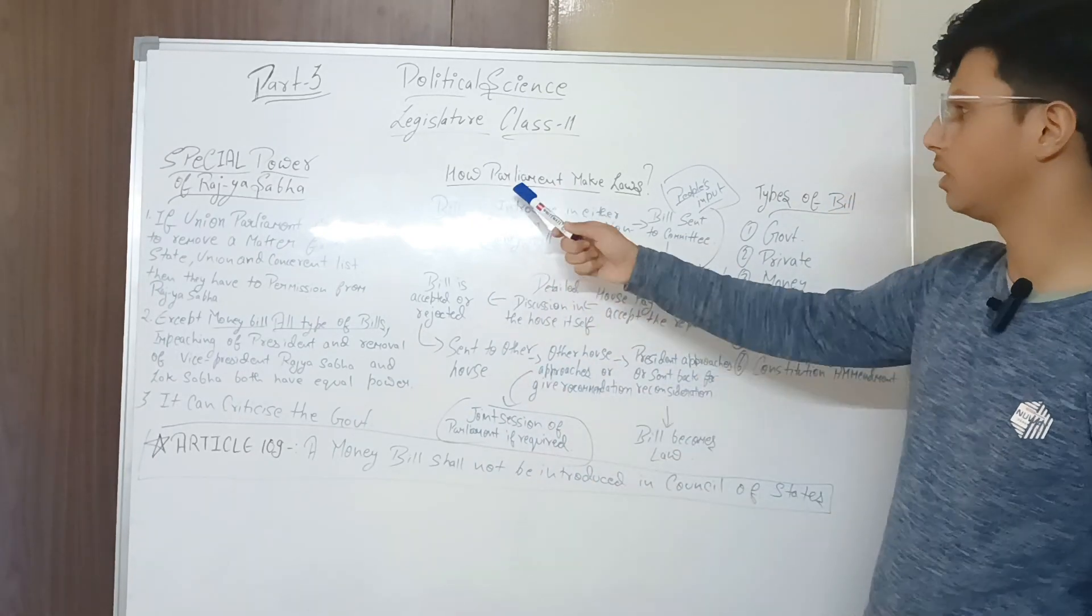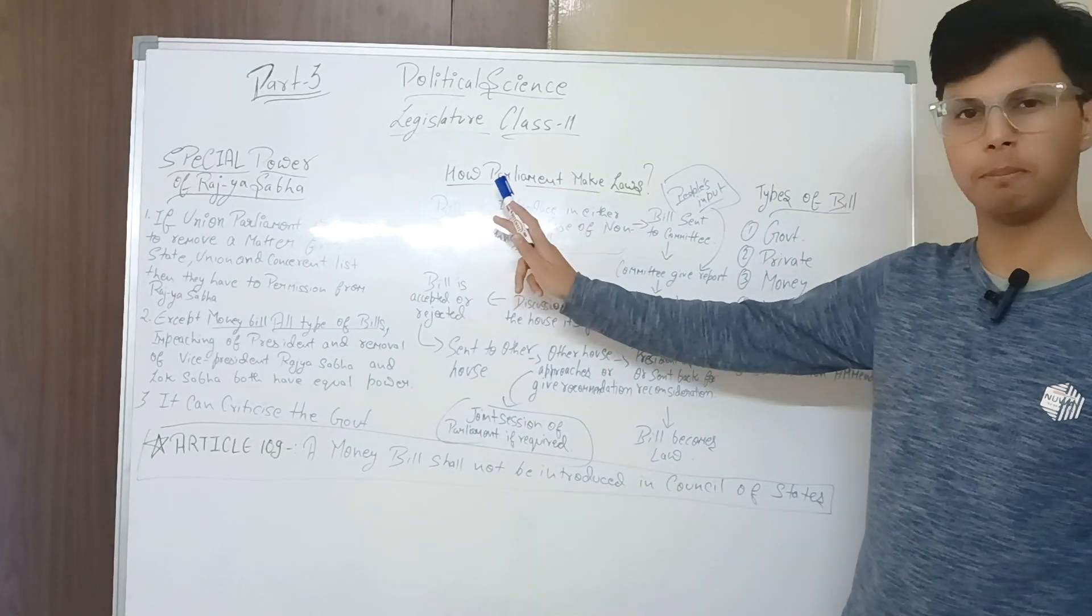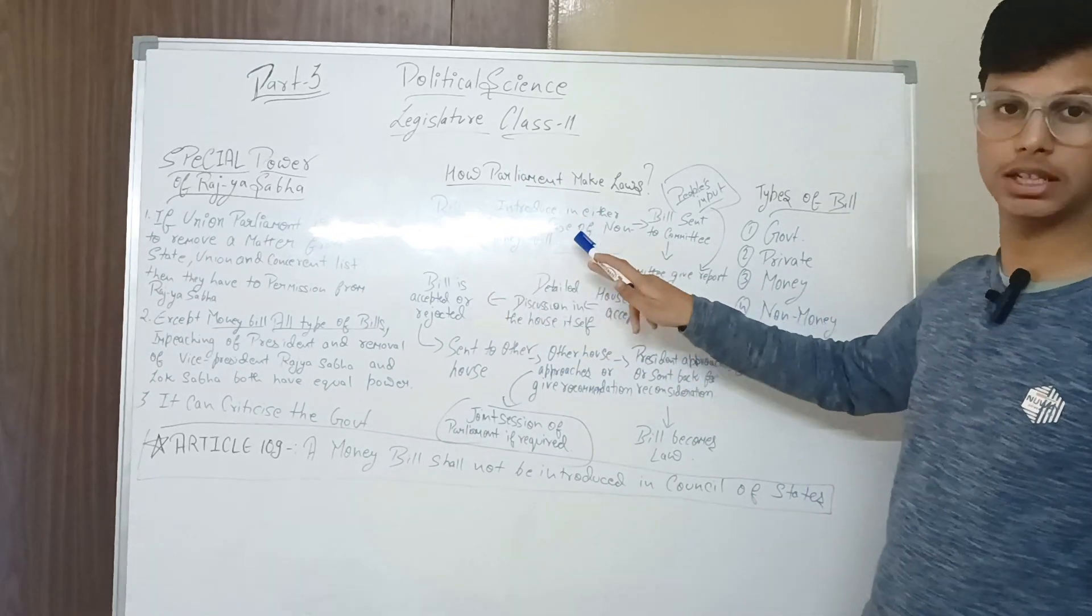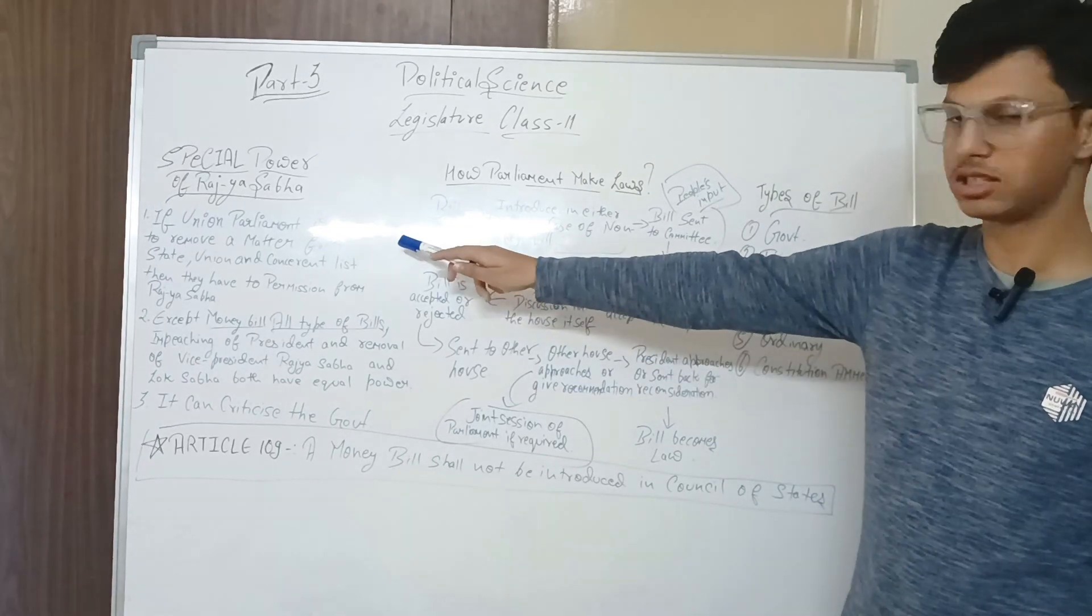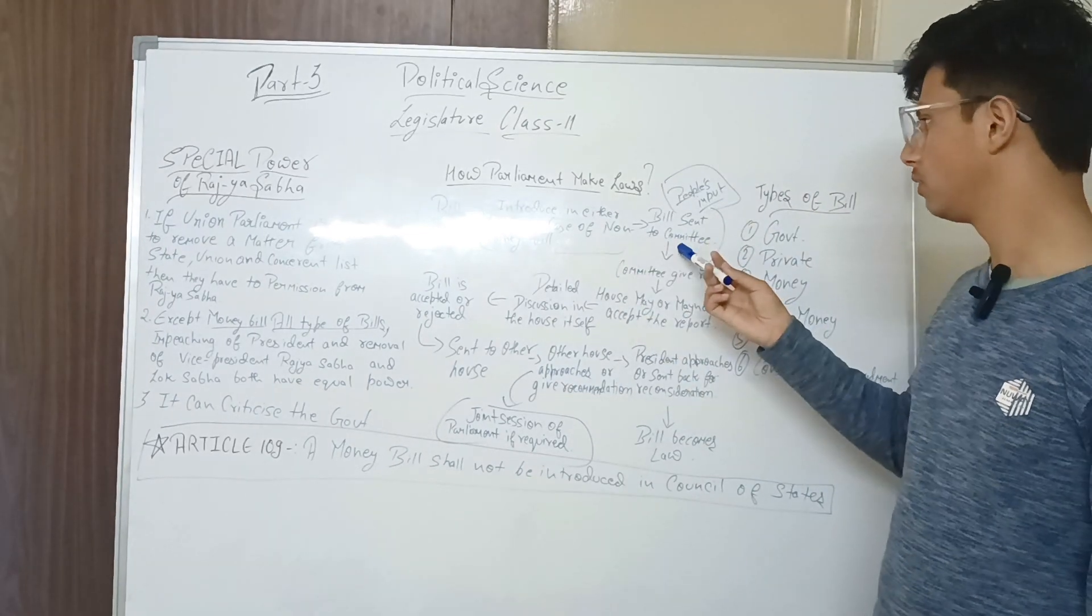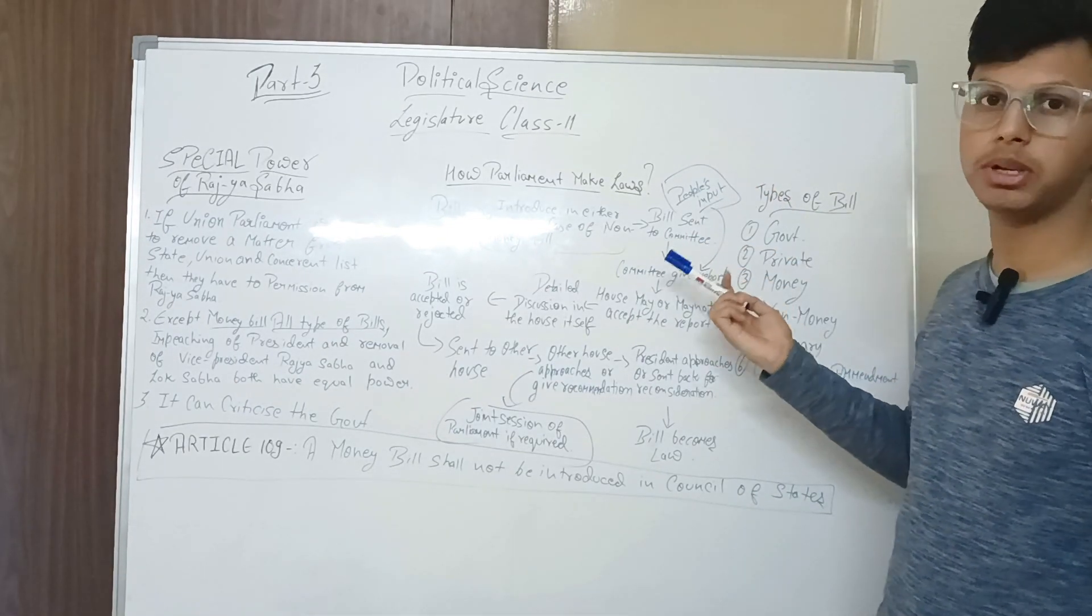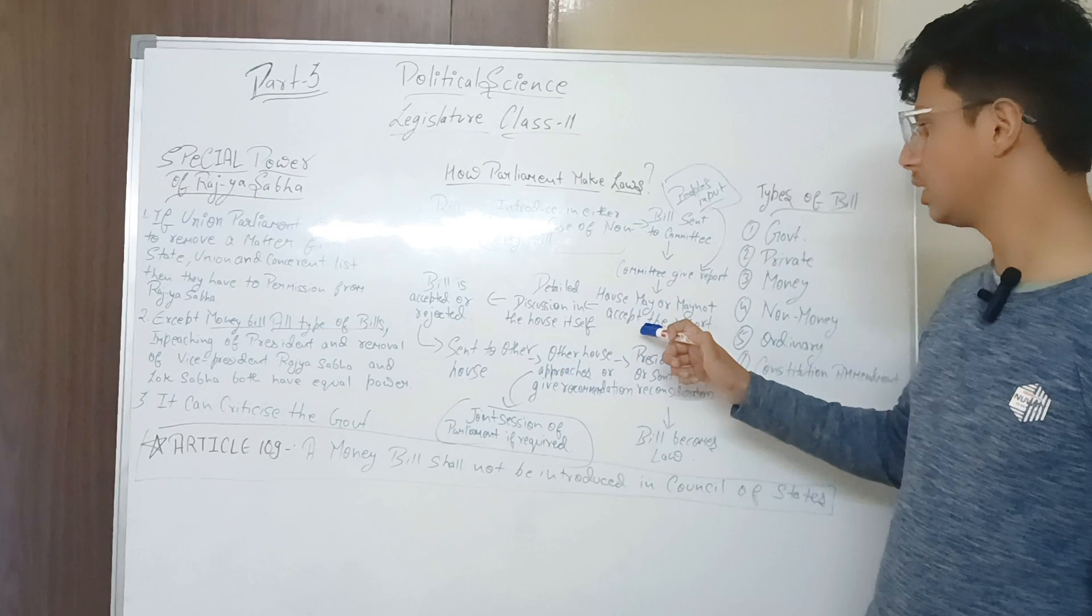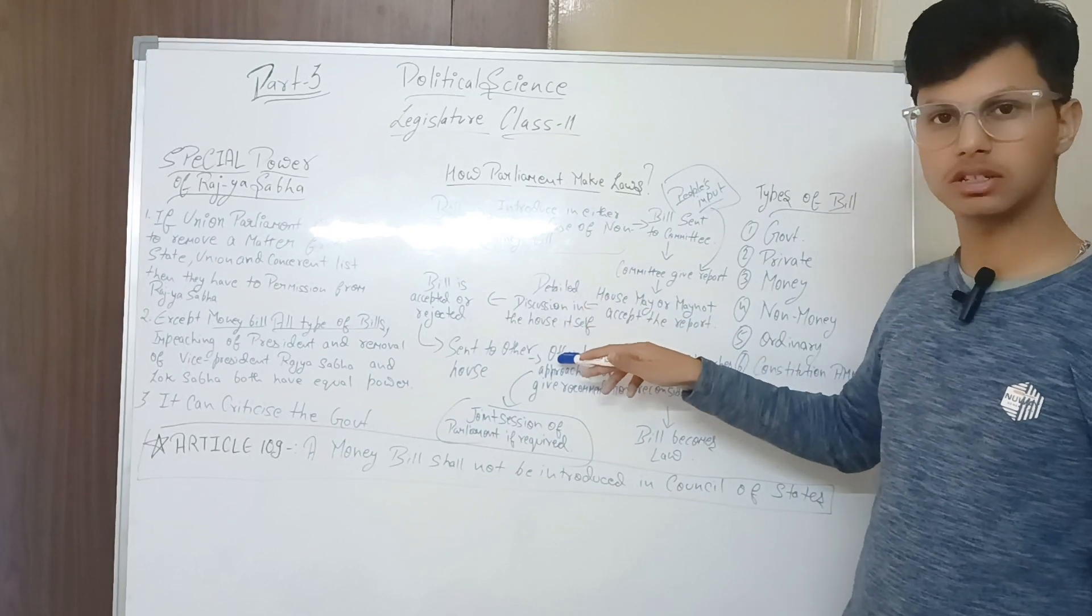Second topic: How Parliament makes laws. This is a very important topic in this whole chapter. Parliament laws, how they are made - often comes in exams for 5-6 marks. First, a bill is introduced in either house if it is a non-money bill. If the bill is non-money bill, it can be introduced in Rajya Sabha or Lok Sabha. Bill goes to committee, committee gives report, people's input happens inside - citizens can give their opinion. The house can accept or reject this report, there is no guarantee. Detailed discussion happens in the house.